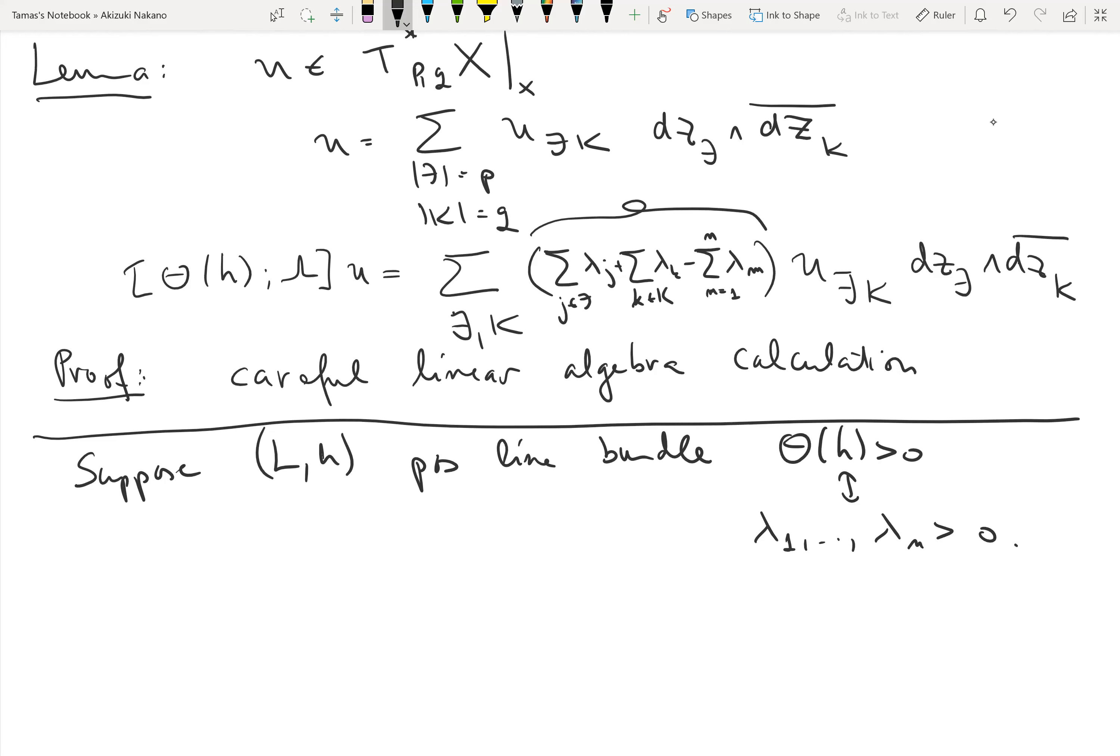There are two cases that will be interesting for us later. Let me start with the one that will be of interest next time. If, in the particular case where p equals n—so we are working with n,q forms—then each multi-index J will have to be 1 all the way to n. In that case, the first part and the last part will be the same and they cancel out.